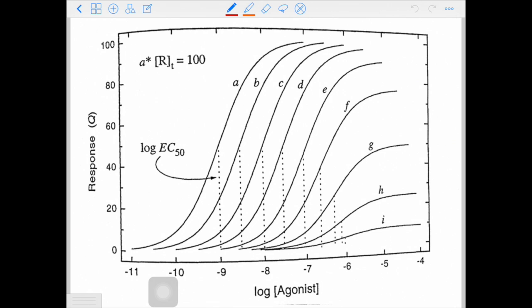I borrowed this graph from Dr. James Wells' lecture notes. From curve A to curve I, Kd2 increases, log EC50 increases, and Qmax decreases.